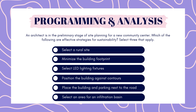Next up is programming and analysis. An architect is in the preliminary stage of site planning for a new community center. Which of the following are effective strategies for sustainability? Select three that apply: select a rural site, minimize the building footprint, select LED lighting fixtures, position the building against contours, place the building and parking next to the road, or select an area for an infiltration basin. Pause to answer.